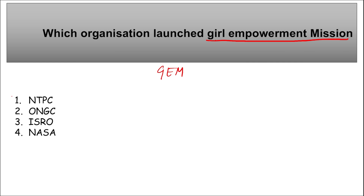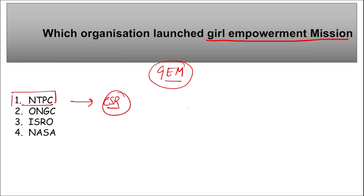A new edition of the Girl Empowerment Mission was launched by NTPC — that is National Thermal Power Corporation. This is the flagship event under their Corporate Social Responsibility (CSR) initiative. Under this GEM initiative, it is expected that around 3,000 underprivileged children at 42 NTPC locations will benefit, and a total of 10,000 girls will benefit under this Girl Empowerment Mission.